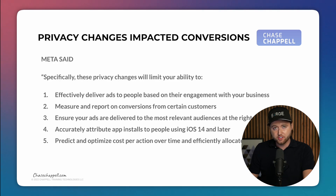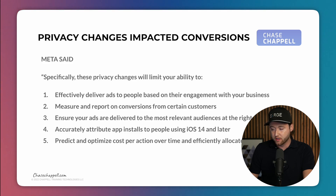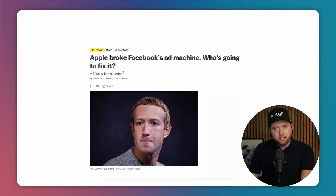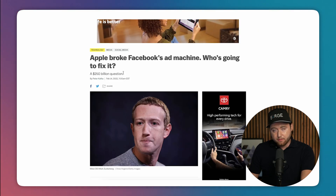Some of the privacy changes that have impacted your results and conversions — Meta has said specifically these changes will limit your ability to effectively deliver ads based on engagement with your business, measure and report on conversions from certain customers, ensure ads are delivered to the most relevant audiences at the right frequency, and accurately attribute app installs to people using iOS 14 and later. It's also impacted how they predict and optimize your cost per action, and Apple has essentially broken Facebook's ad machine.